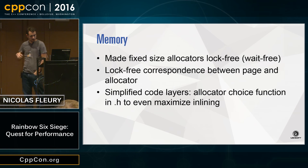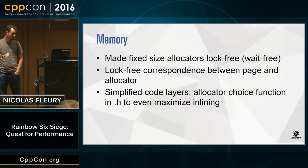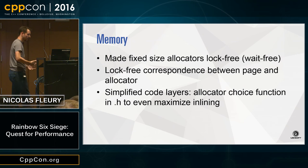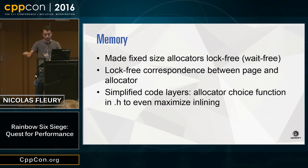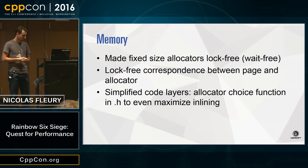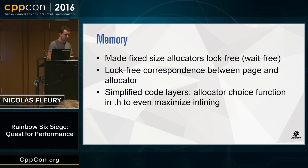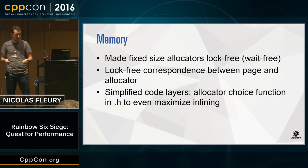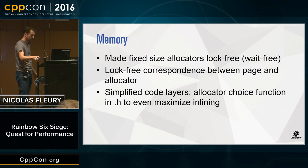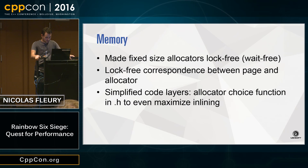What we did is make all the fixed-size allocators lock-free — even wait-free — and we added a queue inside each of these allocators. When you delete, a pointer needs to find its allocator via a correspondence map, which we also made lock-free. We also simplified a bunch of code layers when allocating memory, so the function choosing an allocator is typically inlined. Since the allocation size is often known at compile time — it's the size of a class or a class size multiplied by a constant — we make sure that in all these cases the correct allocator appears directly in the code.